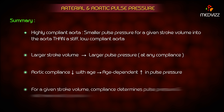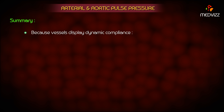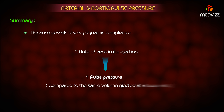For a given stroke volume, compliance determines pulse pressure and not mean aortic pressure. However, because vessels display dynamic compliance, increasing the rate of ventricular ejection will increase the pulse pressure compared to the same volume ejected at a lower rate.